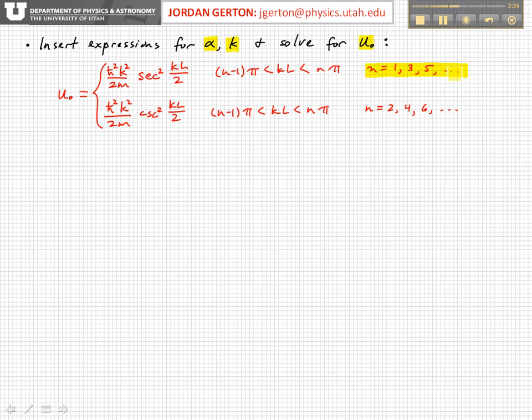Then we basically arrive at a solution, we can write u naught for these odd values of n, and then we can write h-bar squared k squared over 2m, secant squared kL over 2.